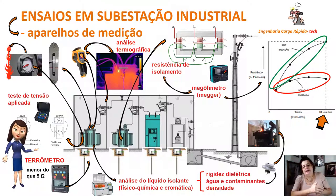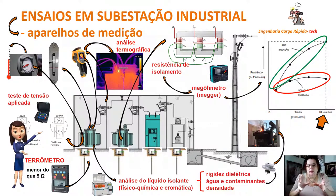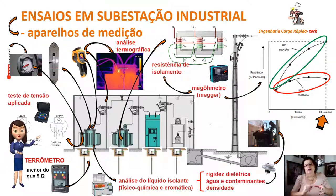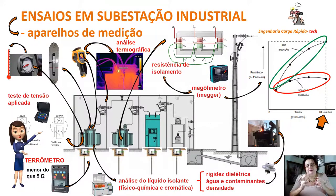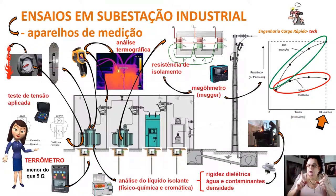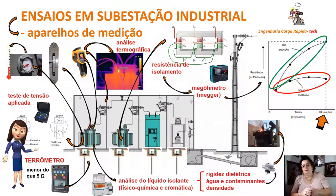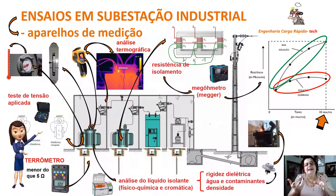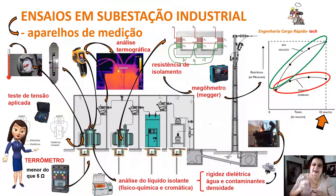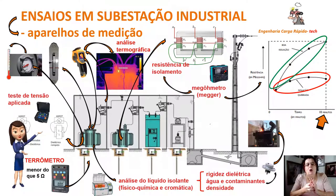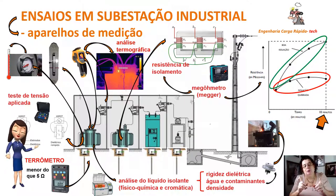Todo transformador a óleo possui uma válvula de segurança que abre quando a pressão interna atinge valores muito elevados. Transformadores de subestação podem explodir e matar pessoas dentro da subestação. Por isso, ao fazer a análise do líquido isolante, é importante verificar a válvula de alívio de pressão, garantindo que ela não esteja colada — pois se o assento colar e não abrir na pressão desejada, pode gerar explosão ou incêndio.